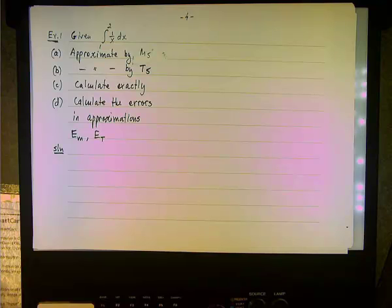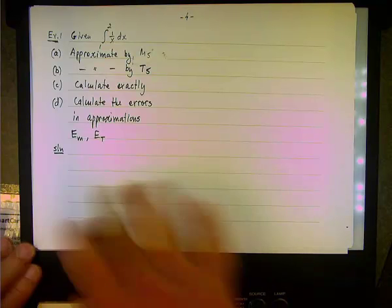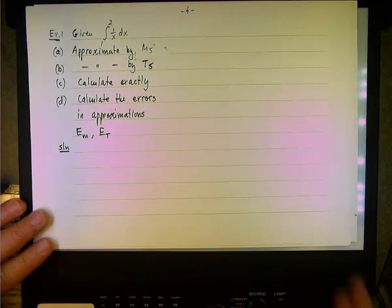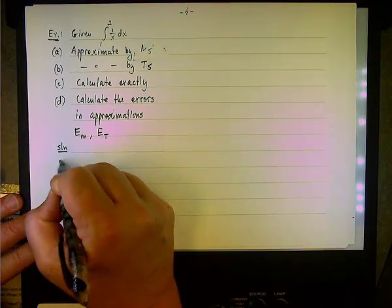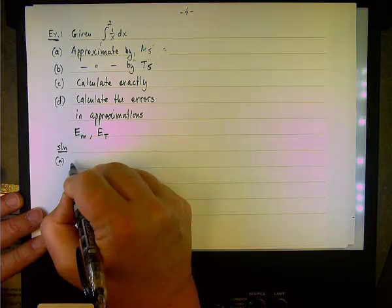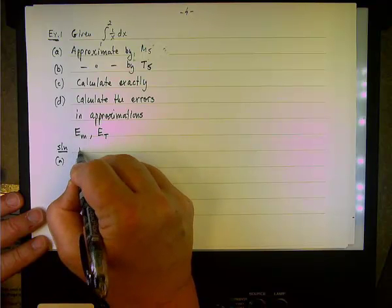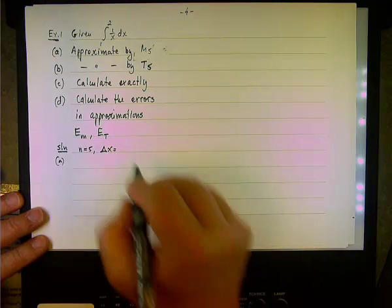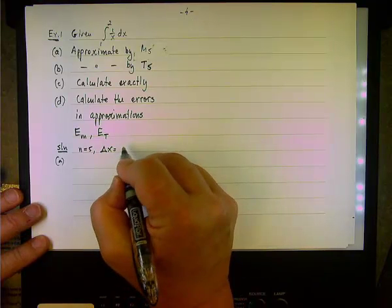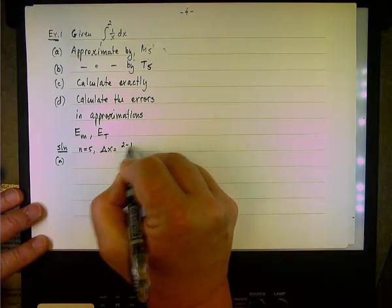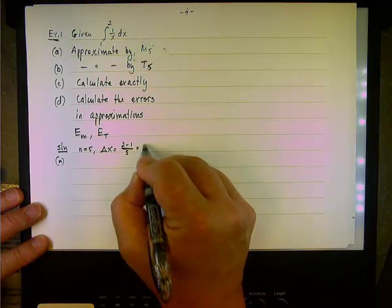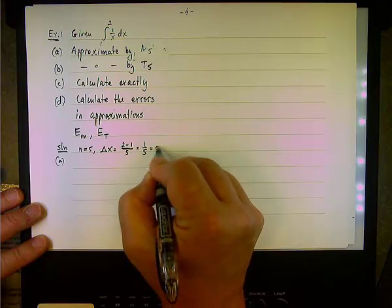And after that, hopefully, I'll have time also to discuss how to estimate the errors in general. All right, so let's start with the first technique. Since n equals 5, then we know that delta x, this is common to the midpoint and trapezoidal rules, will be 2 minus 1 over 5, and therefore it will be 1 over 5 or 0.2.